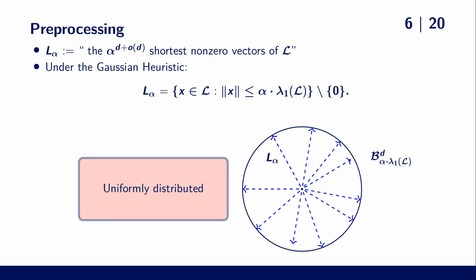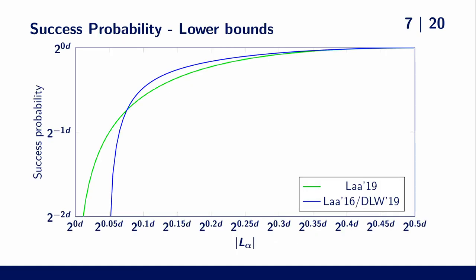So what's actually known about the success probability? Well, we have two lower bounds from previous works. First note that apparently a list size of 2 to the half d is already enough to almost always succeed, already improving the list size by square root compared to the iterative slicer.